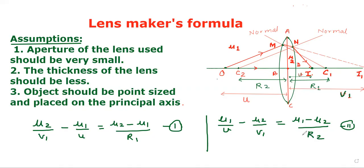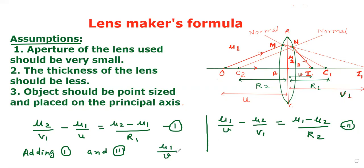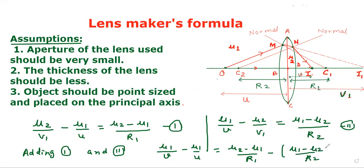We can add equations one and two. On adding, the mu2/v1 terms cancel out, and we get: mu1/v minus mu1/u equals (mu2 minus mu1)/R1 minus (mu1 minus mu2)/R2, which simplifies to (mu2 minus mu1)(1/R1 minus 1/R2).